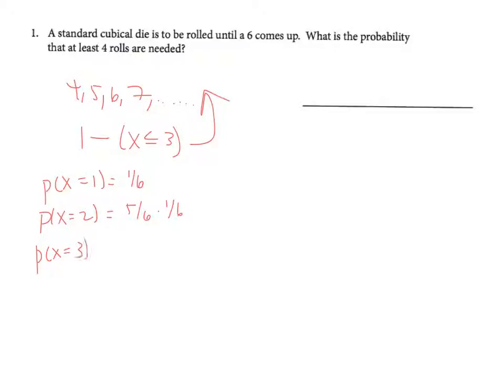The probability that x equals three means I don't roll a six, I don't roll a six, and then I do.